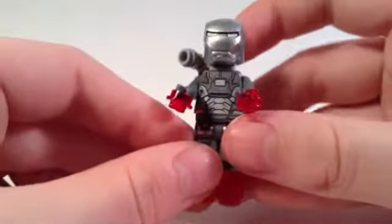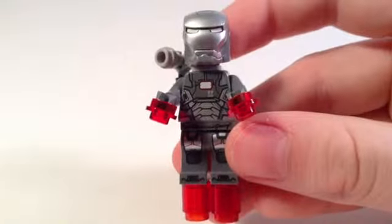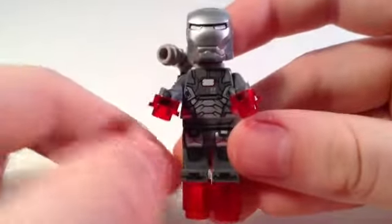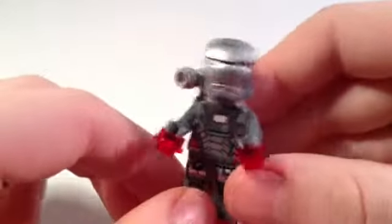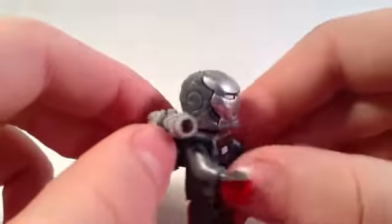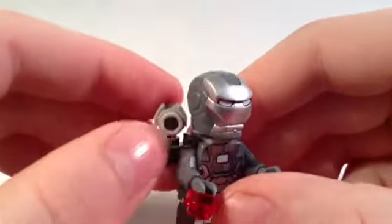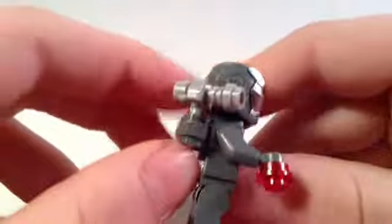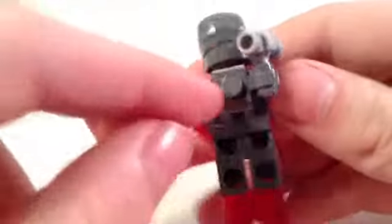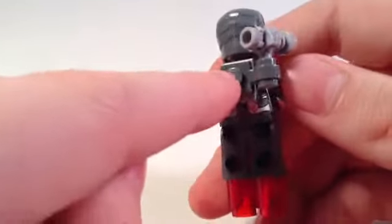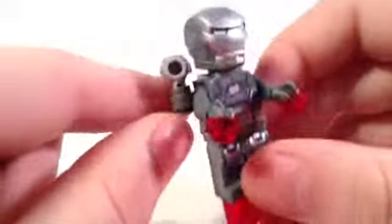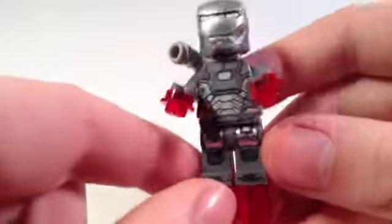And next we have War Machine, that is definitely my favorite figure this set. He's got the gun up here which is a lightsaber hilt, one of these robot hand pieces. This thing goes around the neck and this thing right here is a stud with two other things.